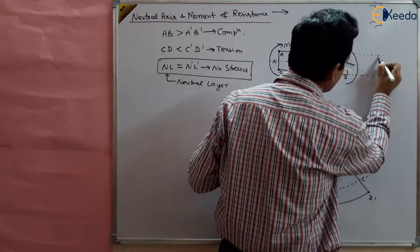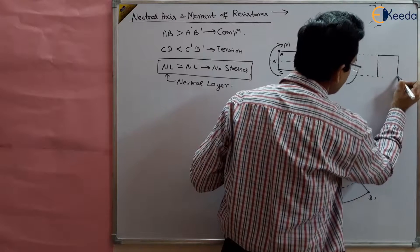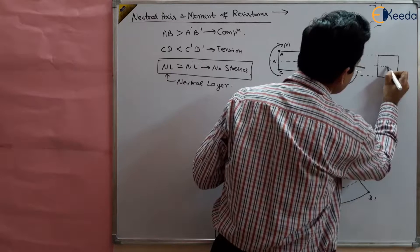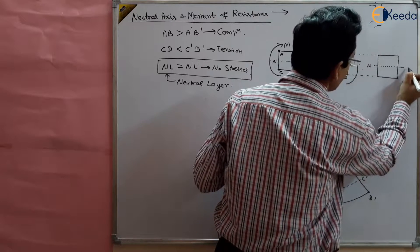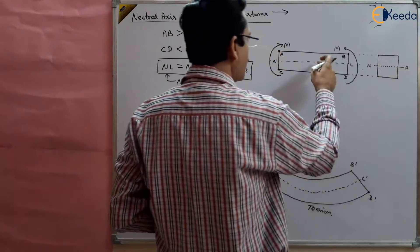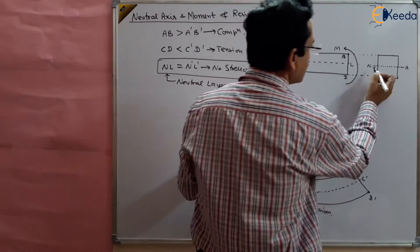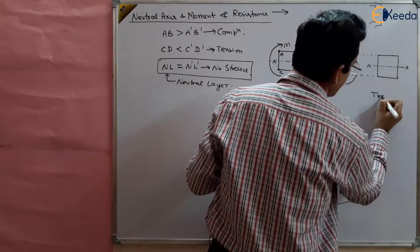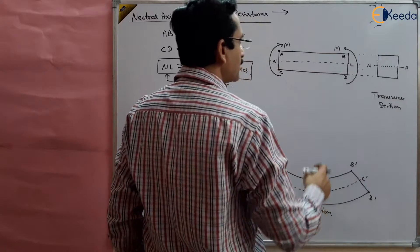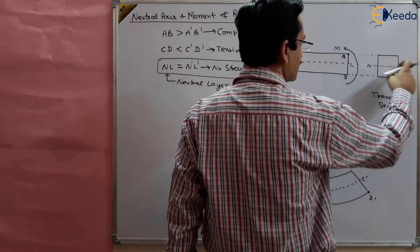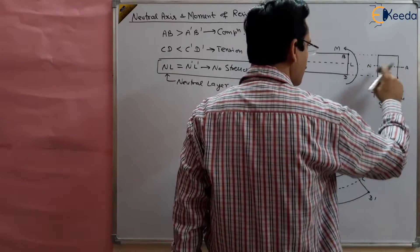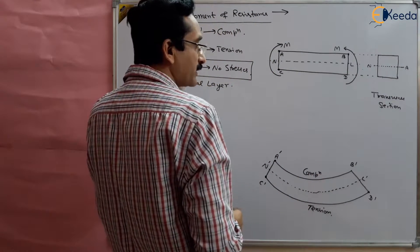In the transverse section, suppose it is a rectangular beam of width B. There is a line passing through the center where the neutral layer cuts the center of gravity of this area. Where the neutral layer and the center of gravity intersect each other, that axis is called the neutral axis. At the transverse section, the neutral layer intersects with the CG of this cross-section.